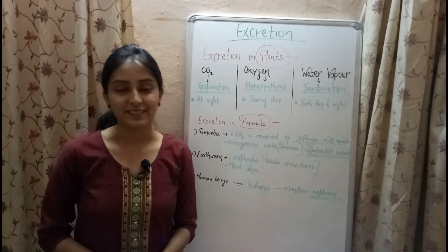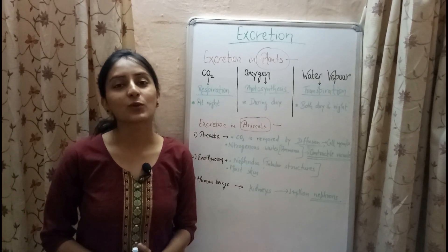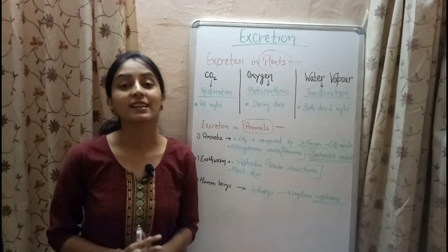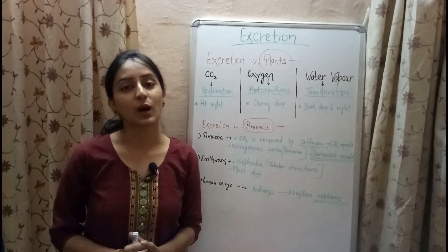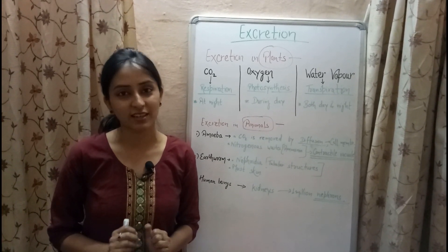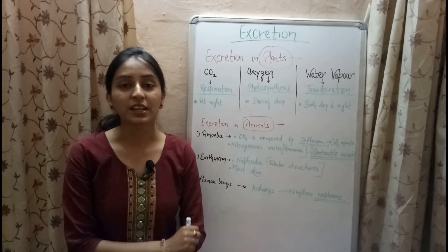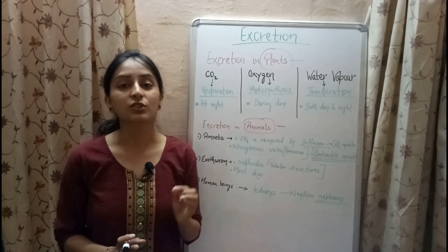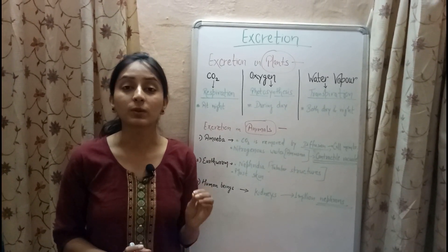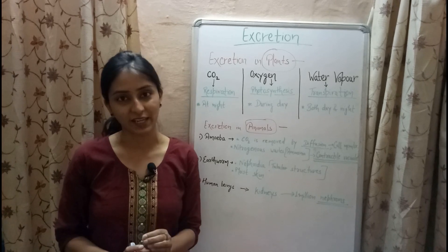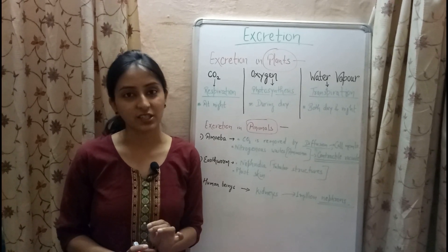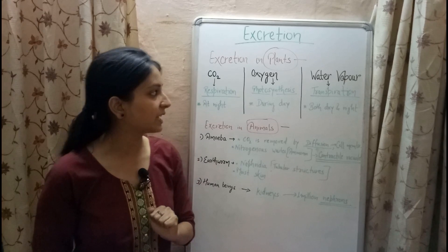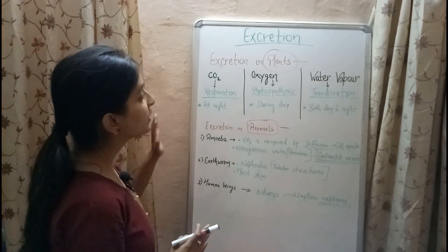Welcome to Biology at Ease. This video is part 6 of the life processes lecture series. In this video, I'll be explaining the process of excretion. Starting with the definition: excretion is the process of removal of waste products from the body of an organism. The process of excretion takes place in both plants as well as animals.